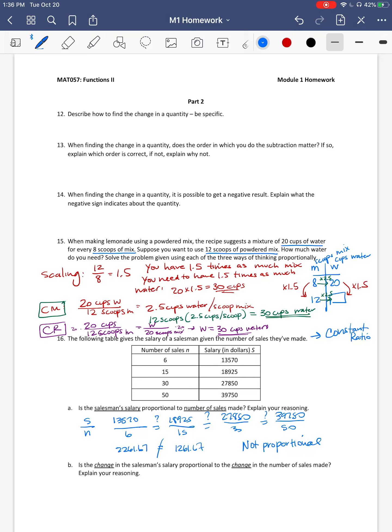So then if I want to say for part B is the change in the salary proportional to the change in the number of sales, I need to come up here and I need to build out my table and find those changes first. So I need to find each of these six changes. So I would do 15 minus 6. I'm going to get 9. 30 minus 15 is 15. And 50 minus 30 is 20. On the salary, I would do 18,925 minus 13,570. When you do that, use your calculator to get 5,355. From 27,850 to 18,925, you're going to get 8,925. And then for your last change, you'll get 11,900.